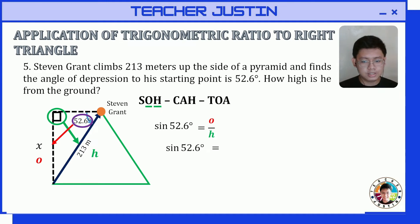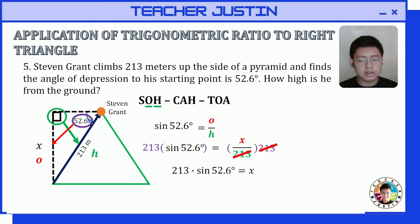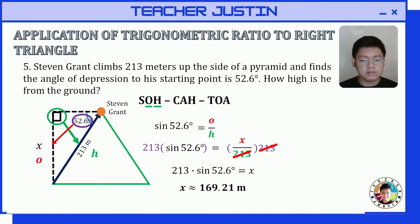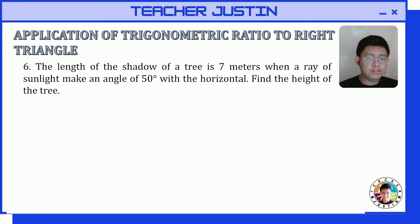Substituting values: sine 52.6° equals x over 213. Multiplying both sides by 213 to isolate x gives us x equals 213 times sine 52.6°. Using our scientific calculator, x is approximately 169.21 meters. That is our final answer — he is 169.21 meters high from the ground.